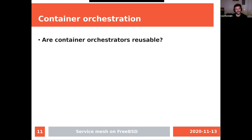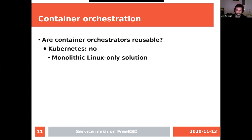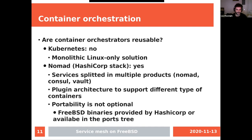Once we have a container, the idea is to use an orchestrator to have a typical Kubernetes-like flow. The idea is not to write a new orchestrator from scratch — that's a lot of work. Kubernetes is not a good candidate because it's rather monolithic and very tightly coupled to Linux, using iptables and similar mechanisms, so it's not really friendly.